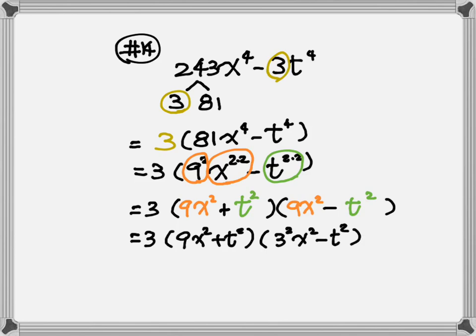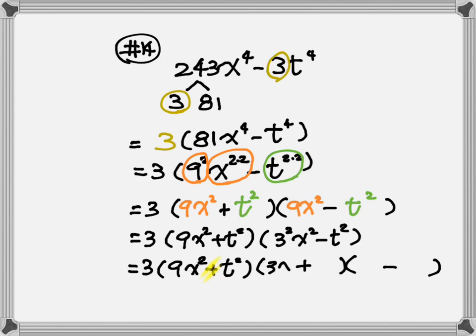The answer isn't complete yet — keep the 3, keep 9x squared plus t squared for the first parenthesis. For the second parenthesis, change 9 to 3 squared, keep x squared minus t squared. We can use the formula one more time on the second parenthesis. We cannot use it on the first because the middle sign is plus, and the formula only works with minus. So apply the formula again: put 3x in each one, then t and t in each one.